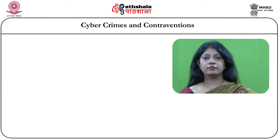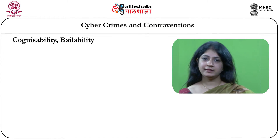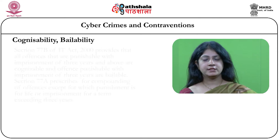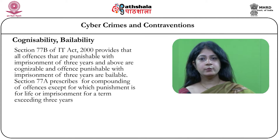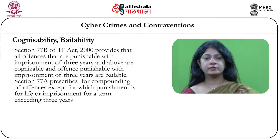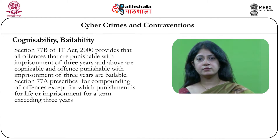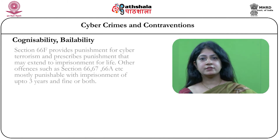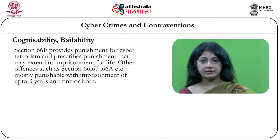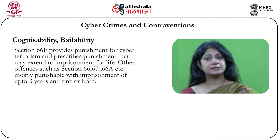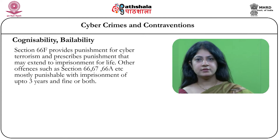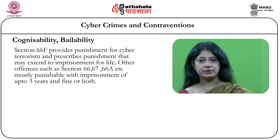This brings us to the question of the criteria of cognizability or bailability of these offenses. When we look at cognizability and bailability we have the CrPC to deal with it, but there is a special section — Section 77B of the IT Act — which provides that all offenses punishable with imprisonment of 3 years and above are cognizable. All those offenses punishable with up to 3 years are bailable. Therefore, if 67A talks about sexually explicit content or there is cyber terrorism under 66F, those are non-bailable offenses which have punishment of more than 3 years prescribed by the Act.